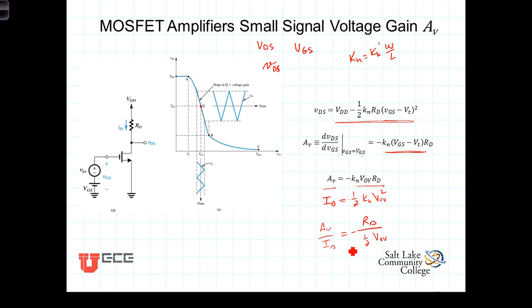Now, multiply both sides of the equation by I_D, and we get then that A_v, our small signal gain term, is equal to negative R_D, I_D divided by one-half V_OV.